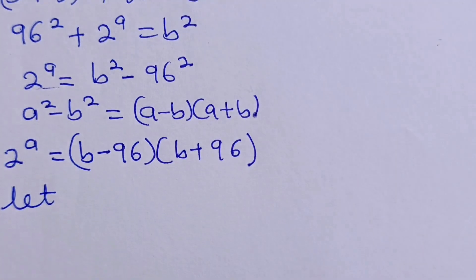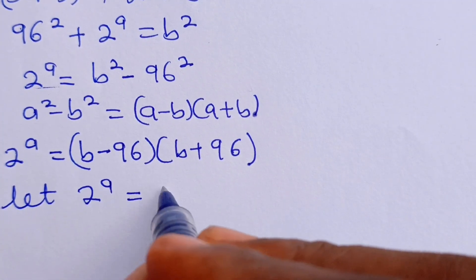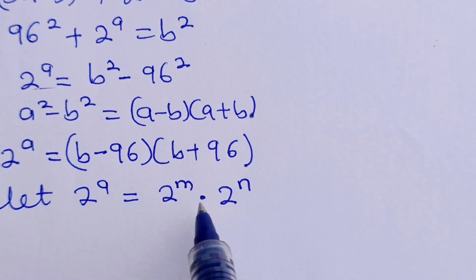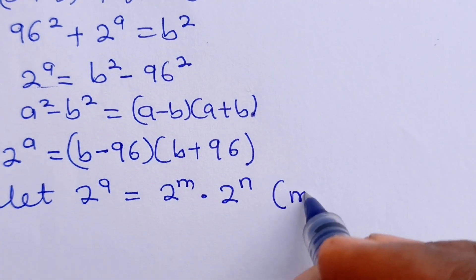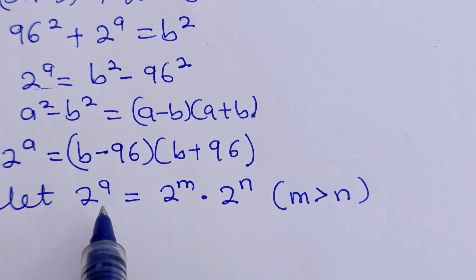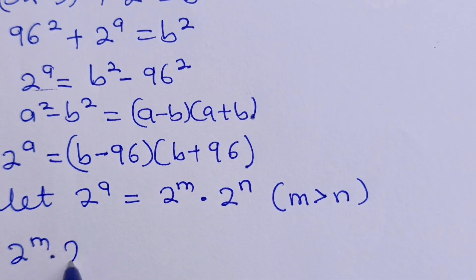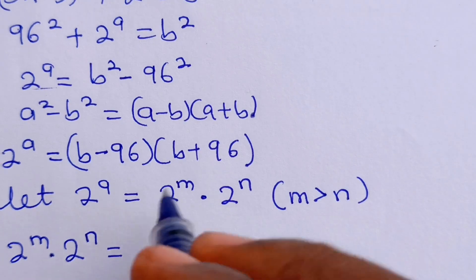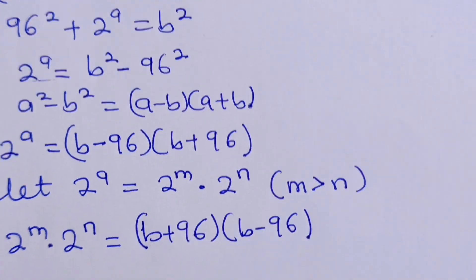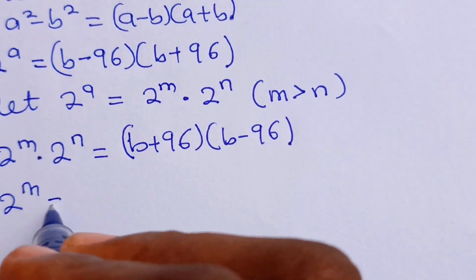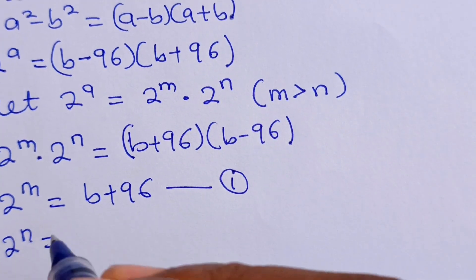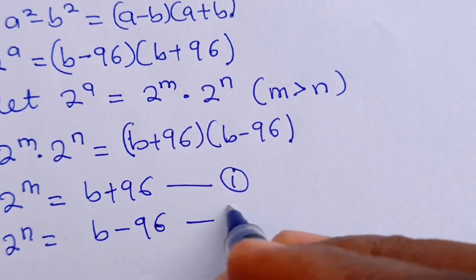Now let's say 2 to the power of A is equal to 2 to the power of M multiplied by 2 to the power of N, using the law of exponents. In this case, M must be greater than N since A is positive. That means if 2 to the power of M multiplied by 2 to the power of N equals B plus 96, multiplied by B minus 96, we can say 2 to the power of M equals B plus 96 — equation 1 — and 2 to the power of N equals B minus 96 — equation 2.